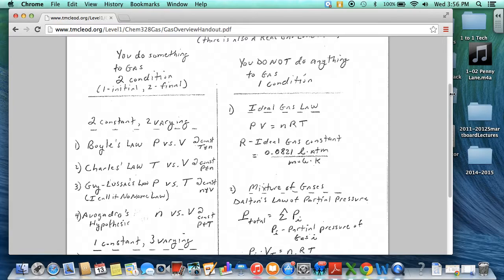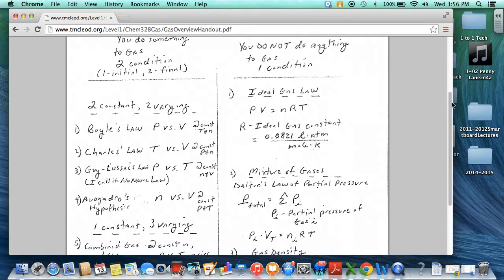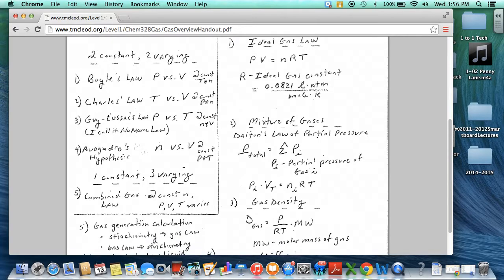Now with two condition problems, there are several different types, but in general there's two major types. Since you have four parameters, you can keep two constant and two vary. Those are what we call the three gas laws and Avogadro's hypothesis. In general, that's the one you usually start with when you teach gas laws. There's always two things being held constant. For example, in Boyle's law, at constant temperature and number of moles, pressure and volume vary. They vary either directly or inversely.